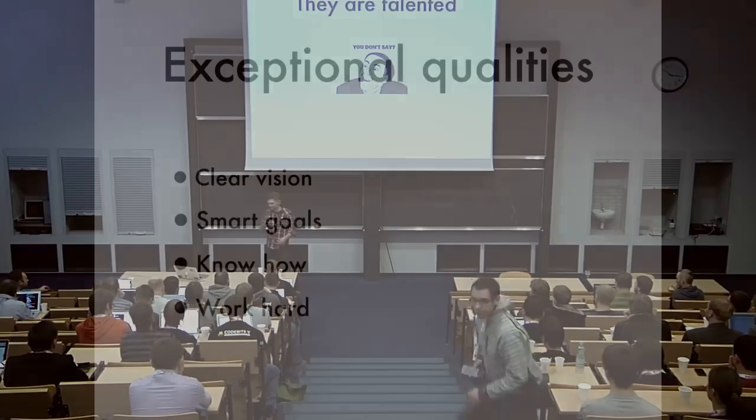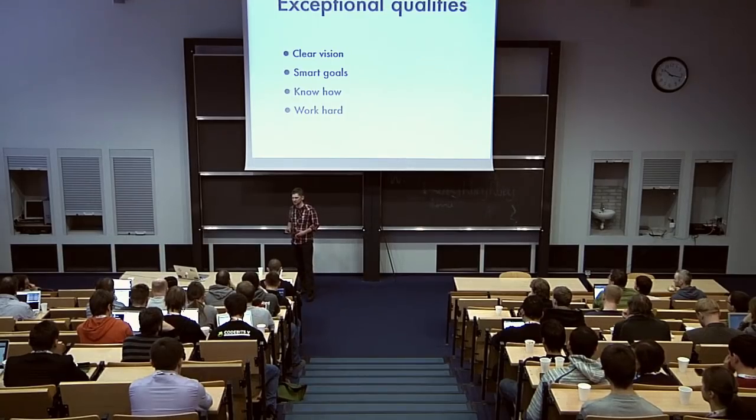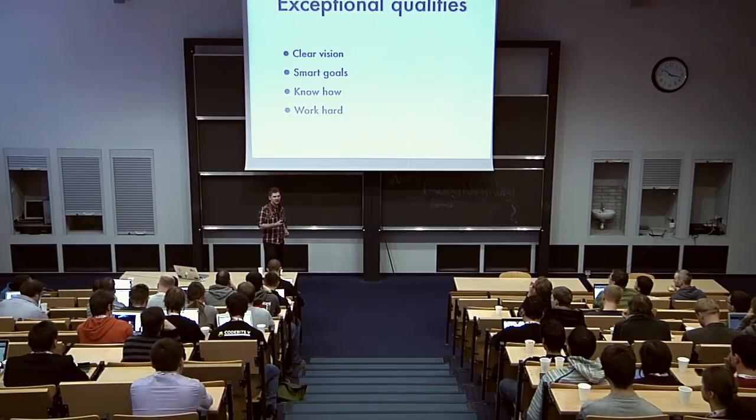So what are other things that those developers could share that could define them to be exceptional? So I found that there are four things, let's call them exceptional qualities. And it's clear vision, which means the clear idea of what do you want to be in the future, who do you want to become, what do you want to do and how do you want to do that. So basically, you have to know what you want to do and who you want to be in a couple of years. They usually can extract smart goals from their vision so they know exactly what they need to do to move toward their vision. And also, they know how to achieve their goals. And if they don't, they at least are searching for the solution so they can find a way how to achieve them and move forward. And last but not least, they are really exceptional hard workers.